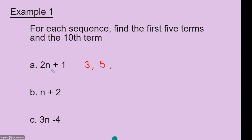To find the third term, n will be 3: 2 times 3 is 6, add 1 is 7. To find the fourth number in the sequence, n will be 4: 2 times 4 is 8, add 1 is 9. To find the fifth number in the sequence, n will be 5: 2 times 5 is 10, add 1 is 11.